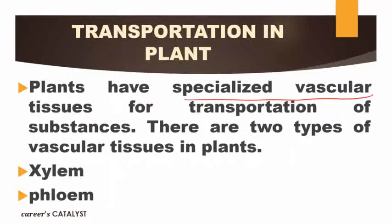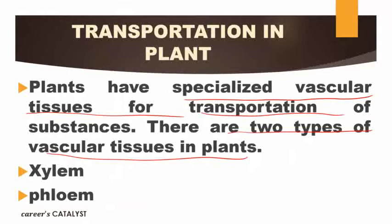Plants have specialized vascular tissue for transportation, which we already discussed in standard ninth. There are two types of vascular tissue: xylem and phloem. Xylem and phloem are complex permanent tissues made up of more than one type of cell. These cells basically help to transport material like water, minerals, and food from one part of the plant body to the remaining parts.